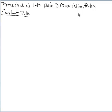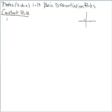Our first rule is going to have us look at a constant function. Let's consider the constant function y equals 7. If you were asked what's the rate of change or the slope of this constant function, it's very obvious that the slope is 0. And no matter what constant function we choose, the slope of that line is going to be 0. So the constant rule is pretty easy.